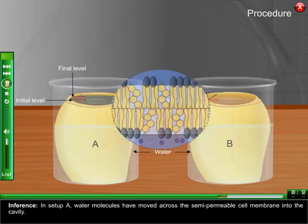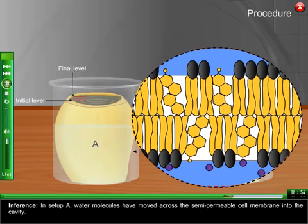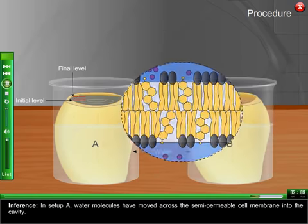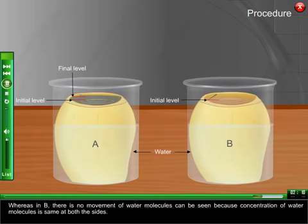Inference. In setup A, water molecules have moved across the semi-permeable cell membrane into the cavity. Whereas in B, there is no movement of water molecules can be seen because concentration of water molecules is same at both the sides.